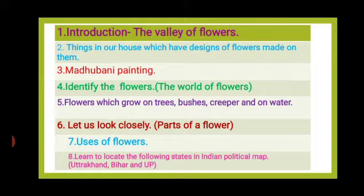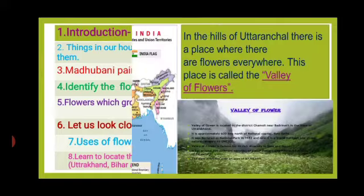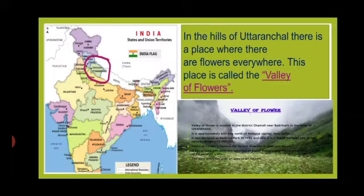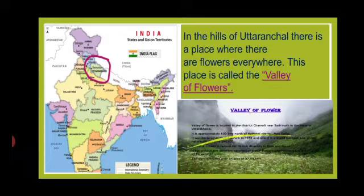In the hills of Uttaranchal, now Uttarakhand, there is a place where there are flowers everywhere. This place is called the Valley of Flowers. Look at this pink circle in the Indian political map. This state is called Uttarakhand.